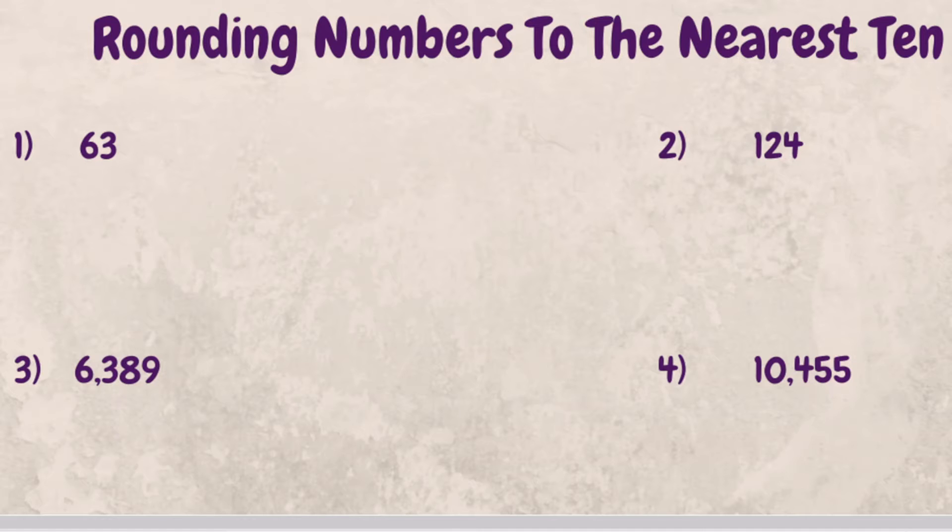Then, we're going to look to the right in the one spot and evaluate that digit. If the value of the digit in the one spot is 5 or greater, we're going to round the digit in the tens spot up. If it is 4 or less, you would round down, but rounding down really just means keep it the same.